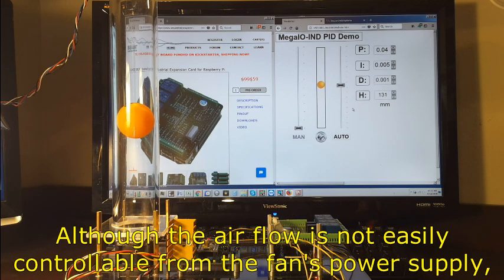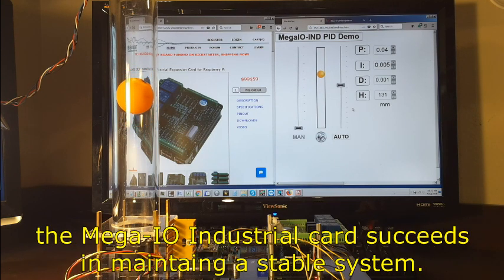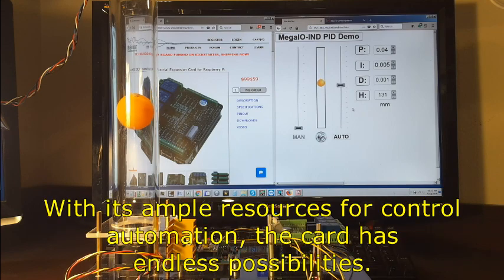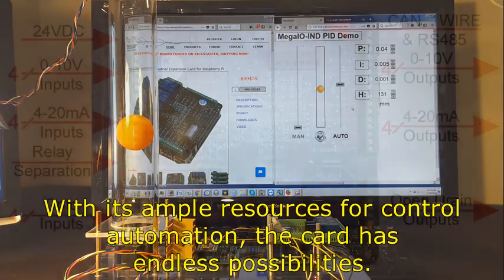Although the airflow is not easily controllable from the fan's power supply, the Mega I.O. industrial card succeeds in maintaining a stable system. With its ample resources for control automation, the card has endless possibilities.